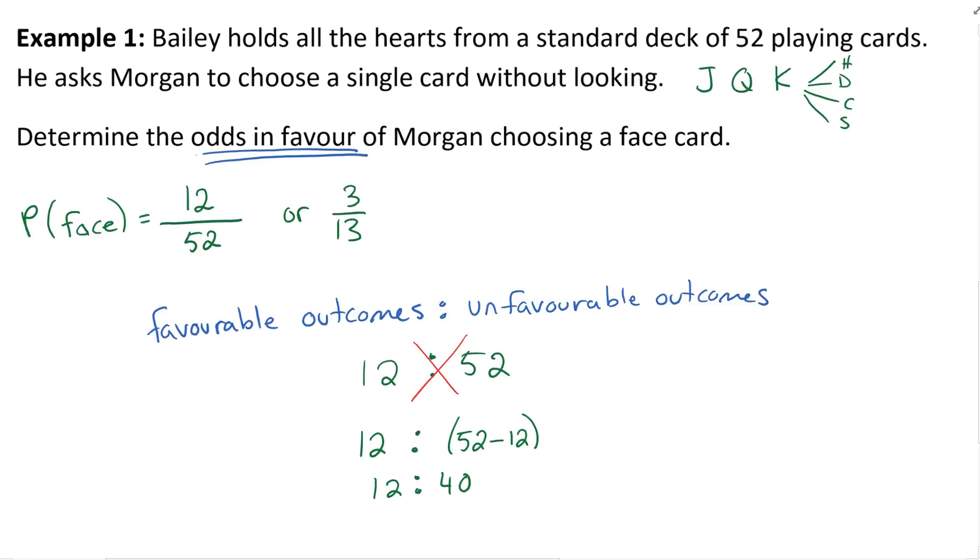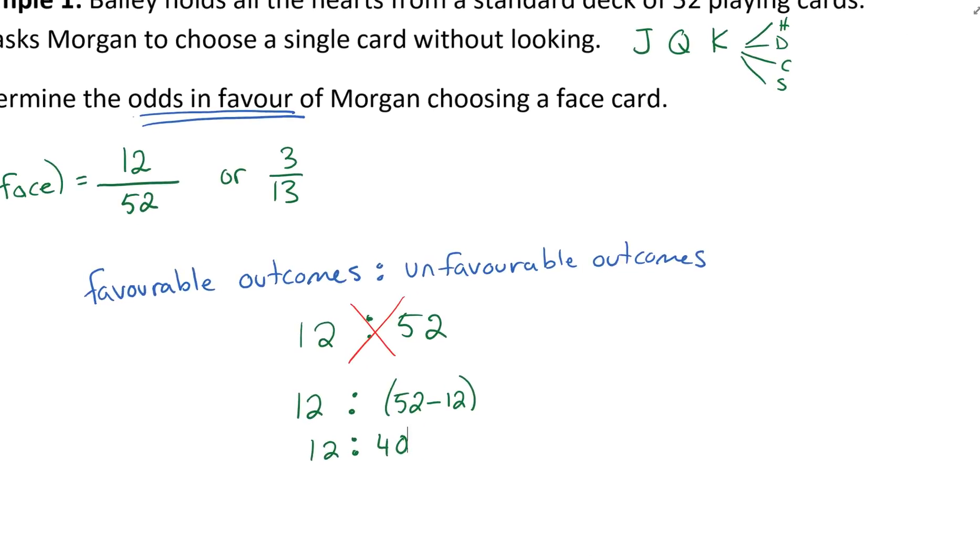Remember, you can use your reduced answer, which is fine. That would be our favorable outcomes are 3 and our unfavorable outcomes would be 13 minus 3, which would be 3 to 10. So if you give me 12 to 40 or 3 to 10, both are considered right.